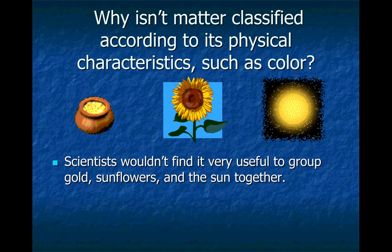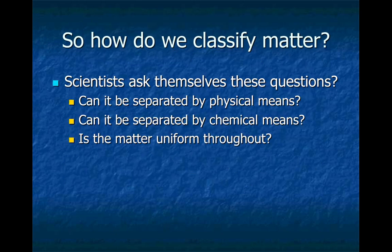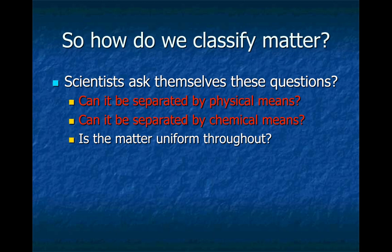We also don't classify by its physical characteristics, such as color. So if you look at the example of gold, sunflower, and the sun, they're the same color, but they're very different from each other. So what do we do when we classify matter? We base it off of three questions: can it be separated by physical means? Can it be separated by chemical means? And is the matter uniform throughout? Let's go ahead and take a look at these first two questions right here, physical and chemical means.